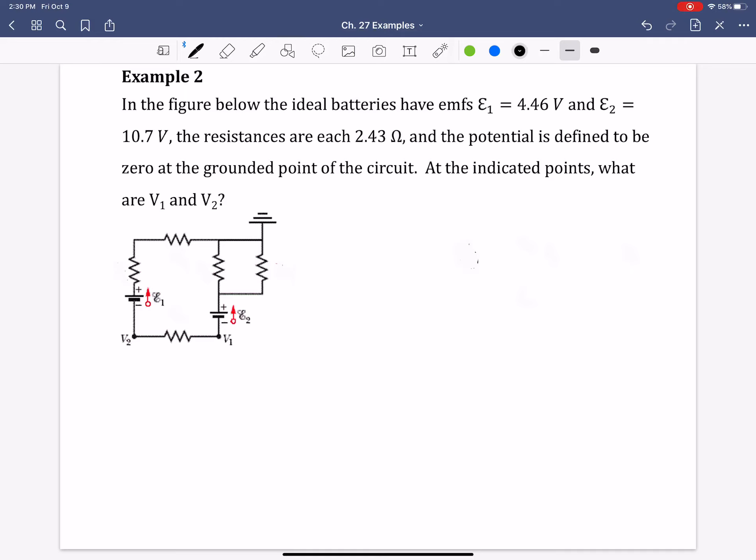All right, so in this example, we want to find the voltage at two specific points in the circuit, which has two batteries and a series of identical resistors. It should be noted that this symbol here means grounded, so in other words, the potential is zero.